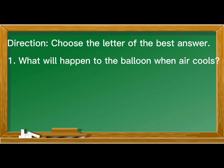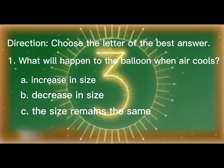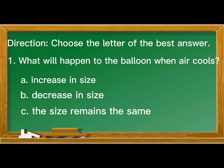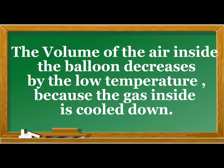Number 1: What will happen to the balloon when air cools? A. Increase in size. B. Decrease in size. Or C. The size remains the same. Timer starts now! 3, 2, 1. What is your answer? B — it decreases in size. The correct answer is letter B, decrease in size. Can you explain your answer? The volume of the air inside the balloon decreases at low temperature because the gas inside is cooled down. Excellent! You did great!